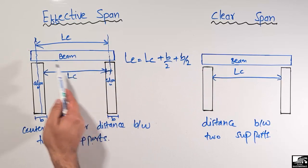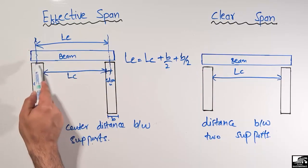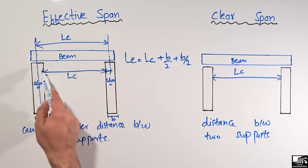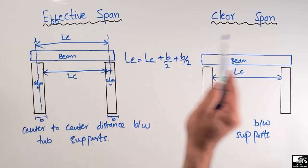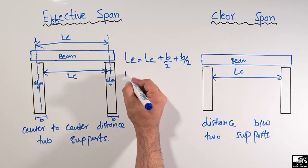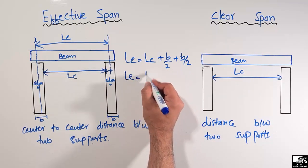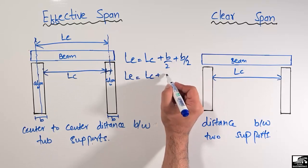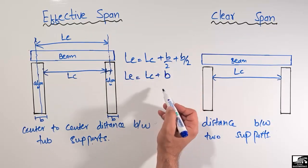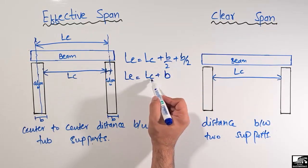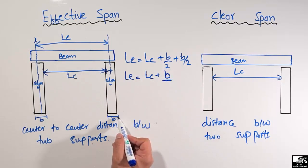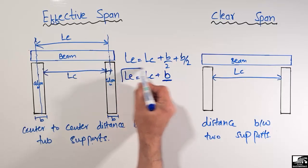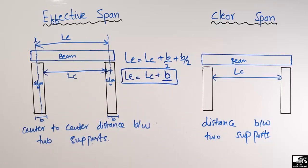So effective length is always greater than the clear length. The effective length EL is equal to the clear length LC plus b, where b is the width of the support or column. So the effective length is always greater than the clear length by the magnitude of b.